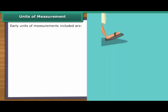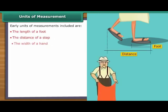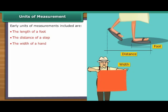Units of Measurement. In the early days, units of measurements included the length of a foot, the distance of a step and the width of a hand. However, these were difficult to maintain as the length of a foot would vary from person to person.